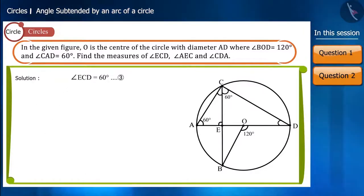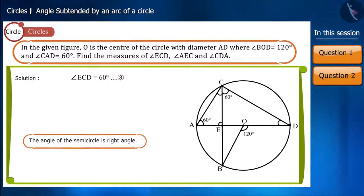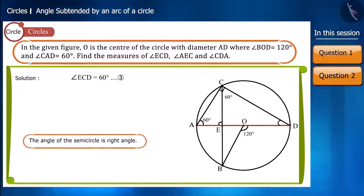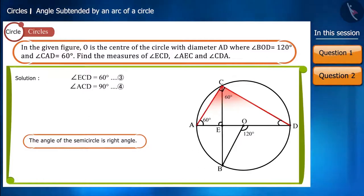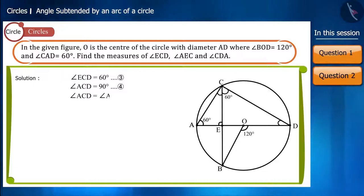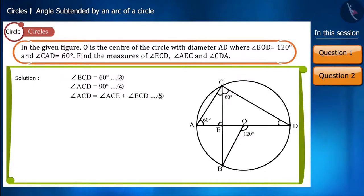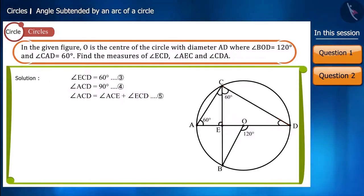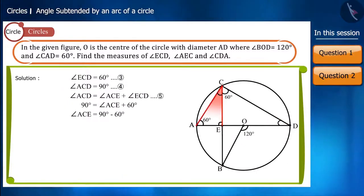We know that the angle of a semicircle is a right angle. As you can see in the figure, angle ACD is the angle subtended at point C by diameter AD. Therefore, angle ACD measures 90 degrees. We know both angle ACD and angle ECD, so by placing their values in the equation, we can determine the value of angle ACE.